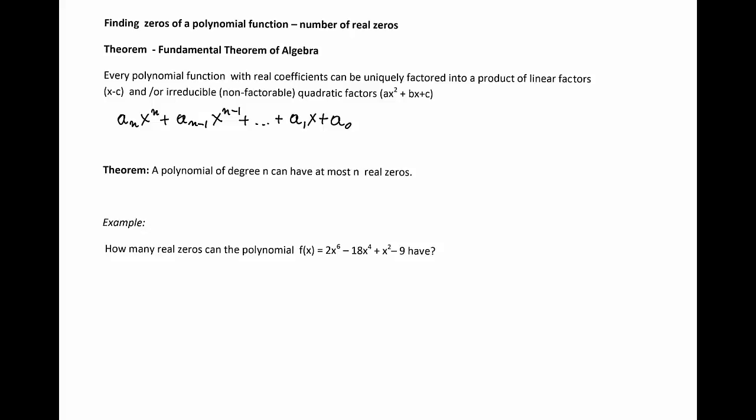So if I take any polynomial in general form, I know the theorem guarantees that that polynomial can be written as some constant times some linear factors: X minus C1, X minus C2, times X minus CK, and then some irreducible quadratic factors. So we can have X squared plus P1X plus Q times, and so on.